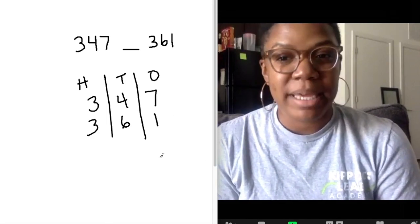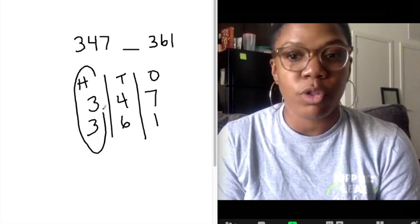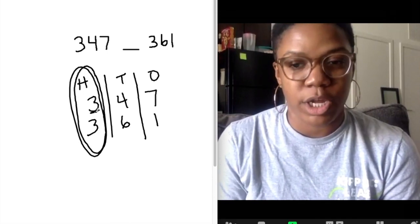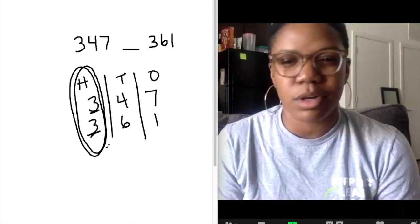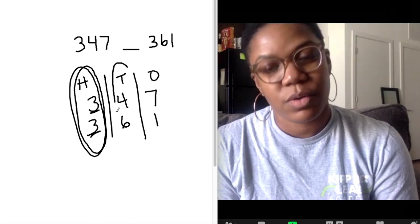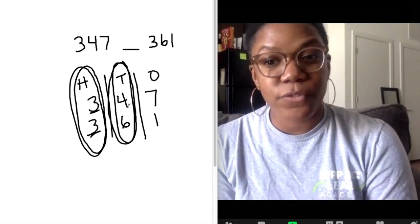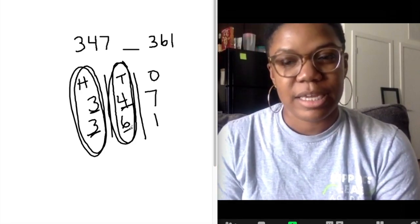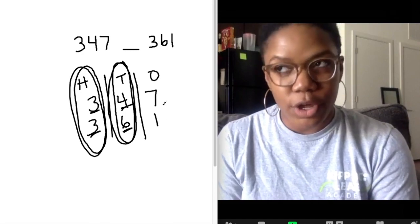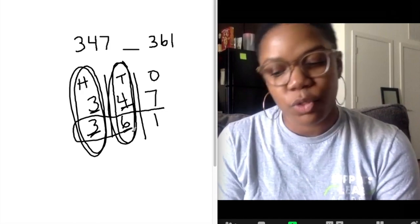Next, I'm going to look at the biggest place value. So here, my biggest value is my hundreds. I'm going to look all the way over at my hundreds. And I see I've got three hundreds and I've got another three hundreds. And so since those are the same, those aren't going to help me too much. So I'm going to go to my next biggest place value. And that would be my tens. And if I'm looking at my tens, I see I have four tens and I have six tens. And I know that six tens is greater than four tens.